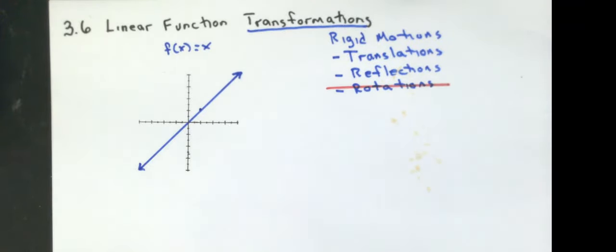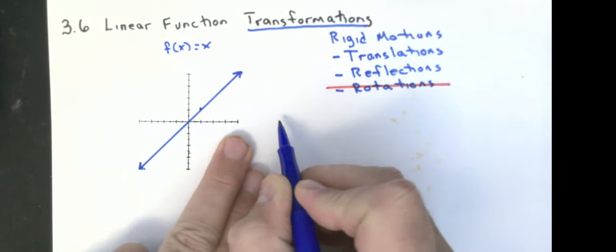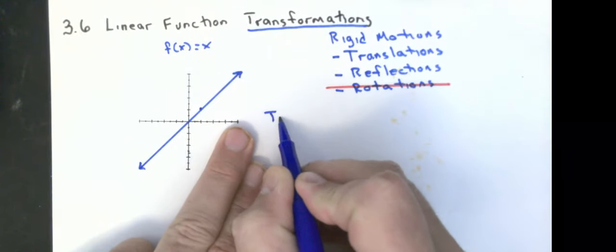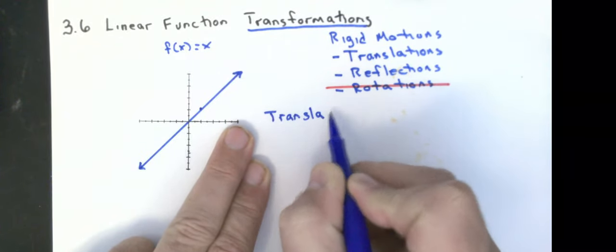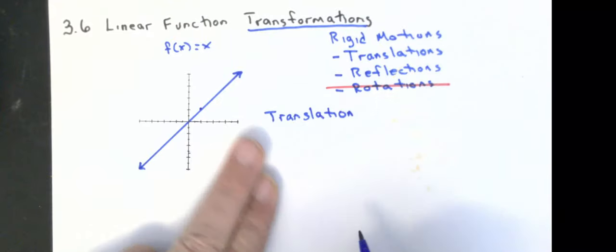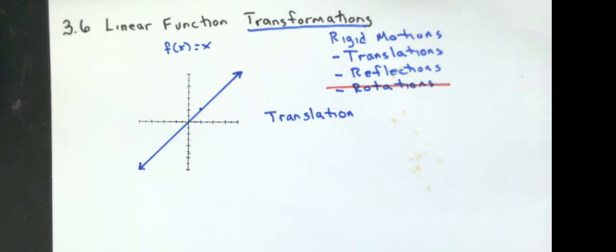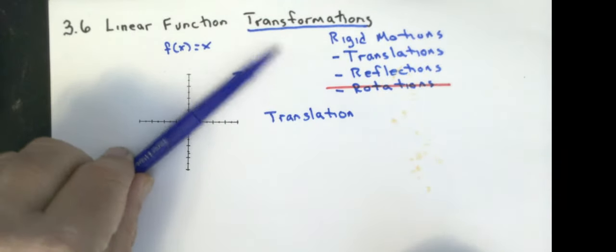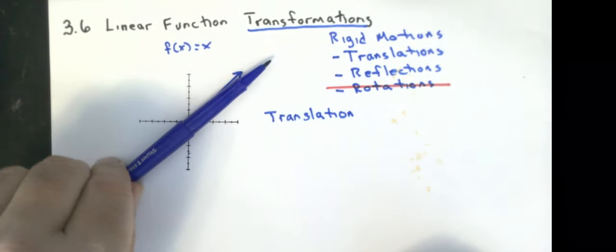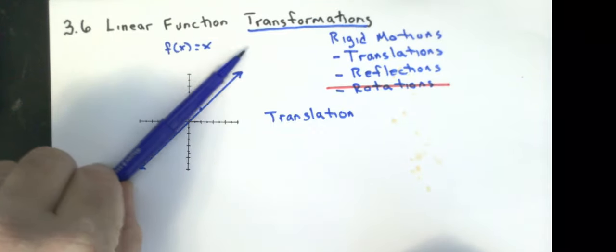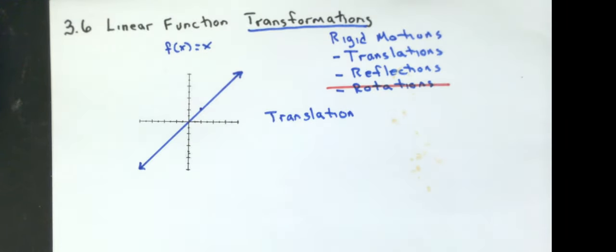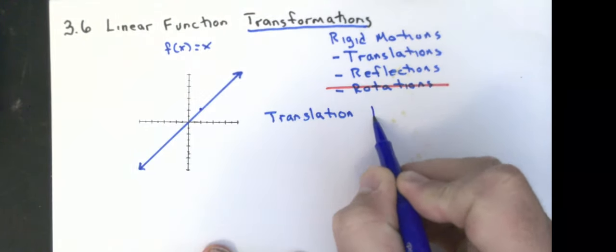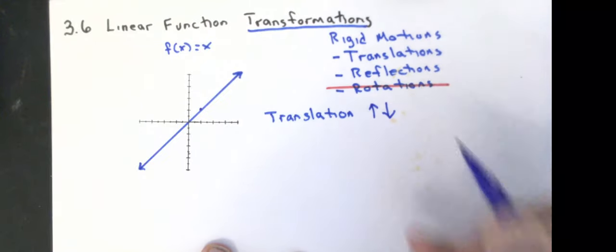First thing I want to talk about is translations. Remember, a translation is, for middle school terminology, a translation would be moving something up, down, left, or right. For linear functions, we're concerned about moving something up and down.